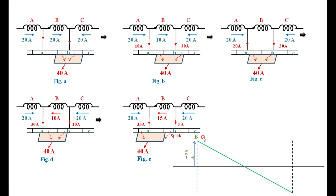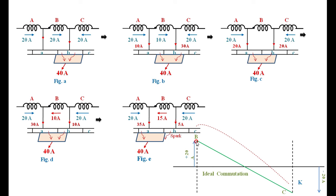The same thing is explained here: if it is changing from plus 20 amperes to minus 20 amperes, then it is called as ideal commutation. The reversal of current is taking place during the commutation period - the time taken from plus 20 amperes to minus 20 amperes is called the commutation period. If the current varies at a uniform rate from B to C in a straight line, then it is referred to as ideal commutation. However, due to the production of self-induced EMF in the coil, the variation follows a dotted curve because of the self-induced EMF opposing the change of current.